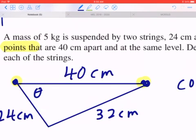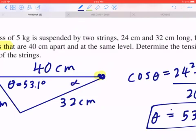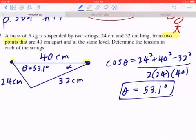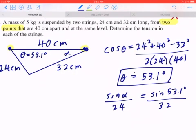So when you go back, add this back in the diagram. Likewise, let's say you call this angle alpha. You can apply the sine law to find this angle. So sine alpha divided by 24 equals sine of 53.1 degrees divided by 32. If you work this out, alpha equals 36.9.